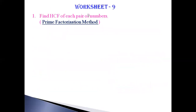Today we are going to see worksheet number nine. First question: find HCF of each pair of numbers. Children, I am going to do this sum by the prime factorization method. Posting A: 81 and 135. We are going to find the factors of these two numbers. First, we can find the factors of 81.